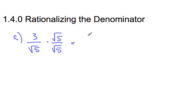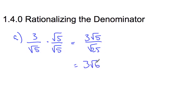So when I multiply that, I get 3 root 5 on the top. And on the bottom, root 5 times root 5 is the square root of 25, which gives us 3 root 5 over 5. Historically speaking, they would then have to multiply 3 fifths — which is 0.6 — times this decimal. And that's a much easier calculation than dividing by that decimal. And so that's where this came from.